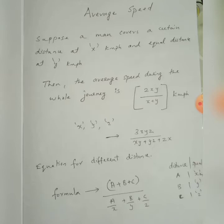Suppose there are three different speeds: first 10 km at x km per hour, second 10 km at y km per hour, and third 10 km at z km per hour — 30 km in total. Where there are three different speeds x, y, and z, the formula becomes 3xyz divided by xy plus yz plus zx. That is the formula for three different equal-distance speeds.